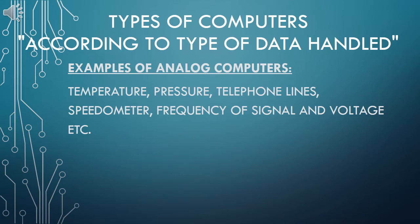Analog computers are primarily used to measure continuous data. For example: temperature, pressure, telephone lines, speedometer, frequency of signals, and voltage.